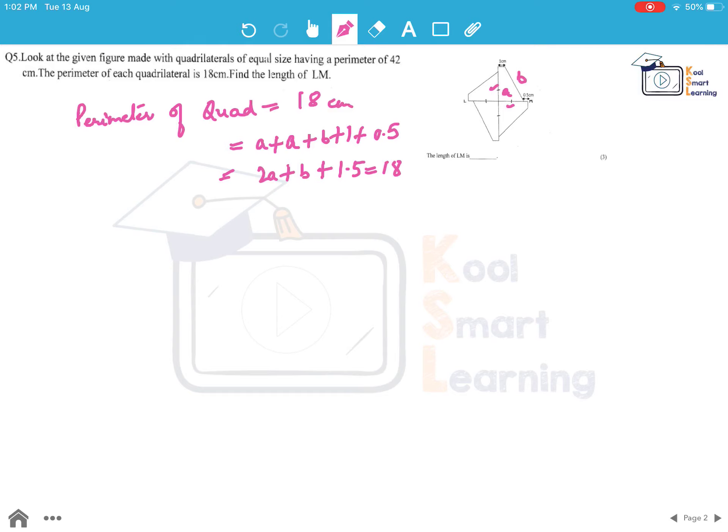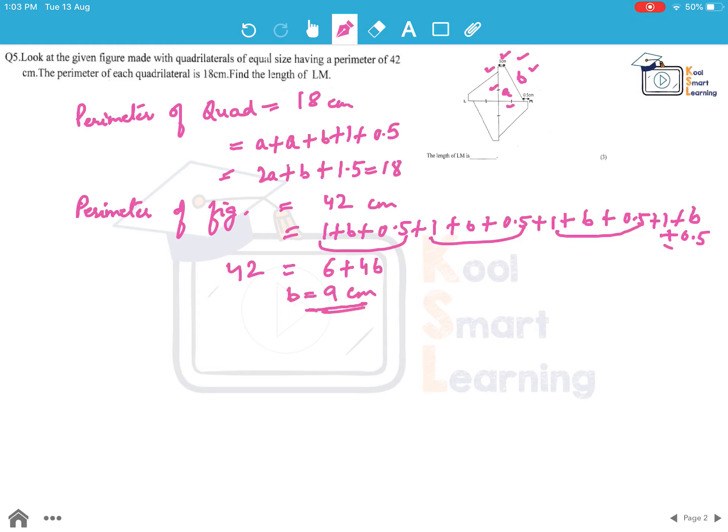And now if we see the perimeter of figure is equal to 42 cm and that is equal to 1 plus B plus 0.5 plus 1 plus B plus 0.5 plus 1 plus B plus 0.5. So we can actually say 1 plus B plus 0.5, these are added 4 times. So we can say 1.5 into 4 is 6 plus 4B is equal to 42 and that gives us B equal to 9 cm.